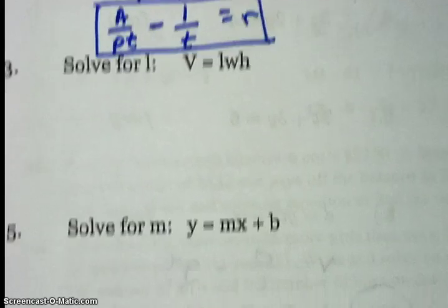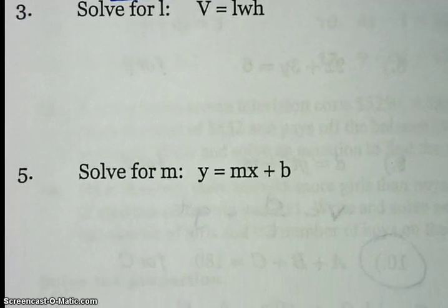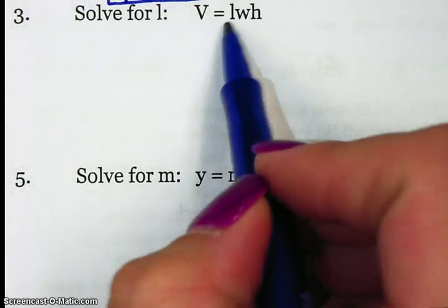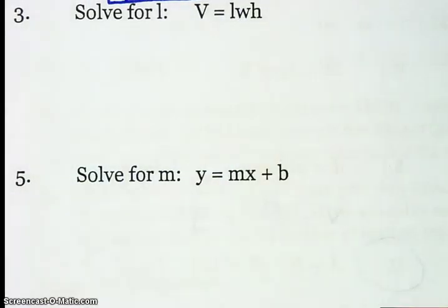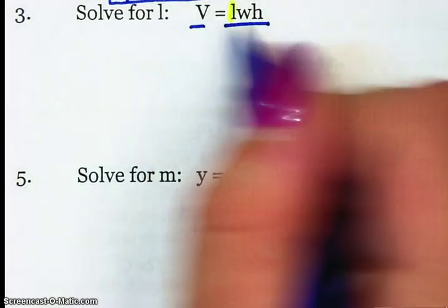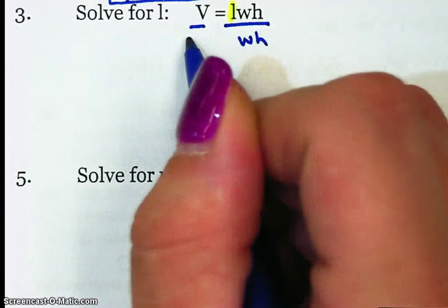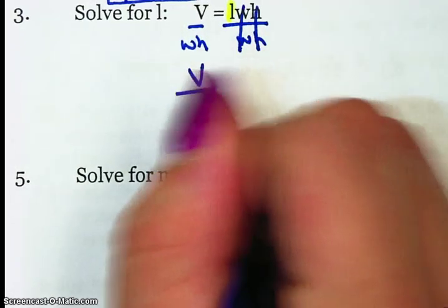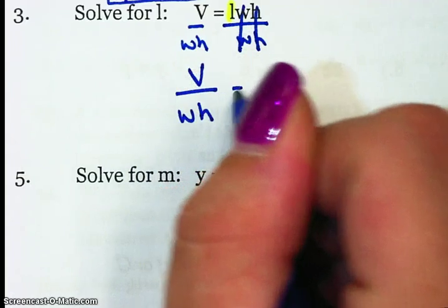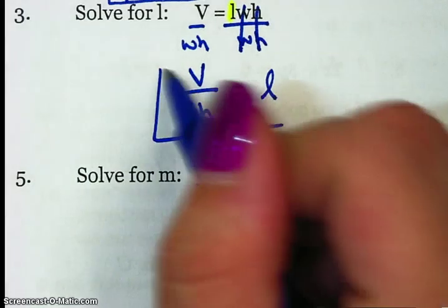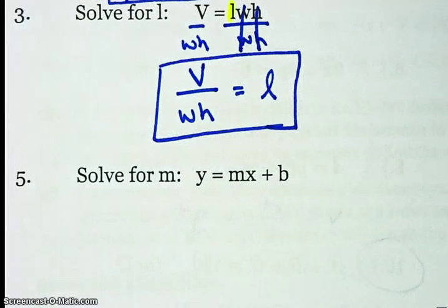Number 3, solve for L. So this is the volume formula. Notice there's only one term, LWH. To solve for L, that first letter, I have to undo multiplication by dividing. And I'm going to divide by W, H. So V over W, H equals L. I solve for L. There's no reducing there, so I'm done.